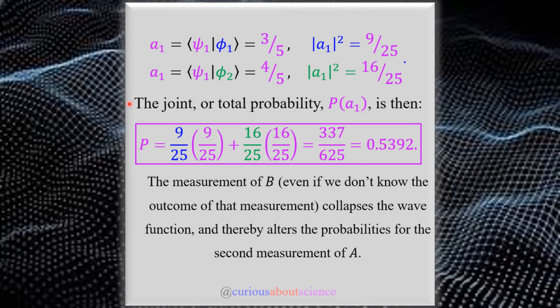So thus, we have a joint or total probability of P(A1) is equal to the multiplicative probabilities. Where this was the probability, the blue here was the probability of being an eigenstate phi 1. The green was the probability of being an eigenstate phi 2. And then, if we want to find A1 from the probabilities of being in those particular states, we get a 9 25ths and a 16 25ths from right here. So you multiply and add those together, we see we get 337 over 625, which is about 50%.